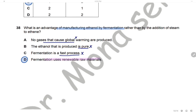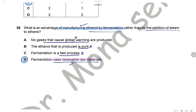Question 38: What is the advantage of manufacturing ethanol by fermentation rather than by addition of steam? Fermentation uses glucose, which comes from plant sources and is a renewable material. The other options are wrong: fermentation does produce carbon dioxide which causes global warming; the ethanol produced is not pure; and fermentation is not a fast process. The answer is D.